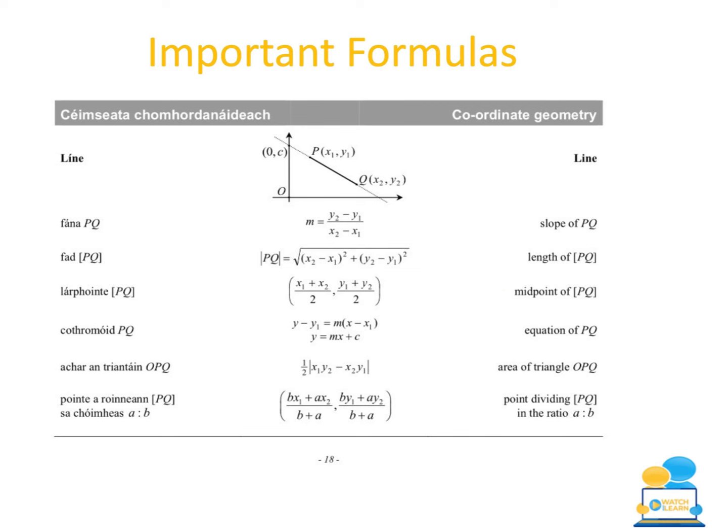Our first formula is the slope of a line formula, which talks about the gradient of the line — is the line increasing or decreasing? The letter m is used for the slope of a line, and the formula is y2 minus y1 over x2 minus x1. To use this formula we need to know two points on the line if we want to find out what the slope is.